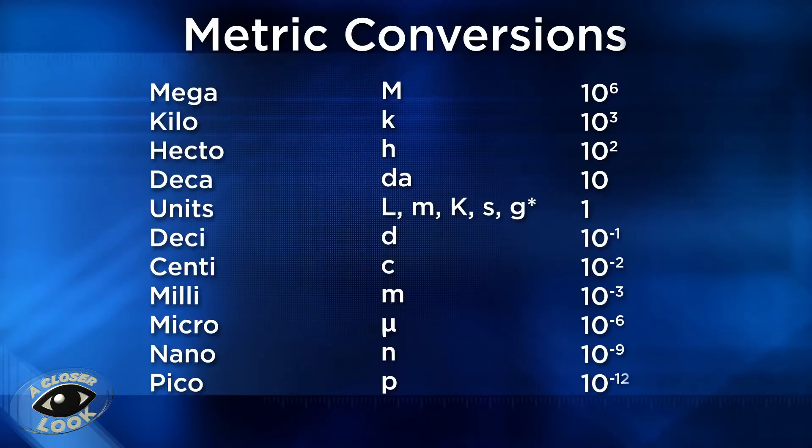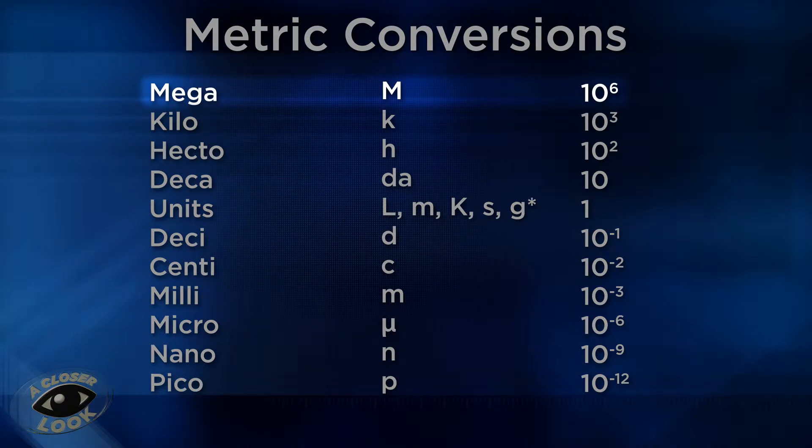Next, let's look at a chart of metric conversions. Mega stands for one million, represented by a capital M. Kilo means a thousand, shown by a lowercase k. Hecto stands for one hundred, represented by an h.